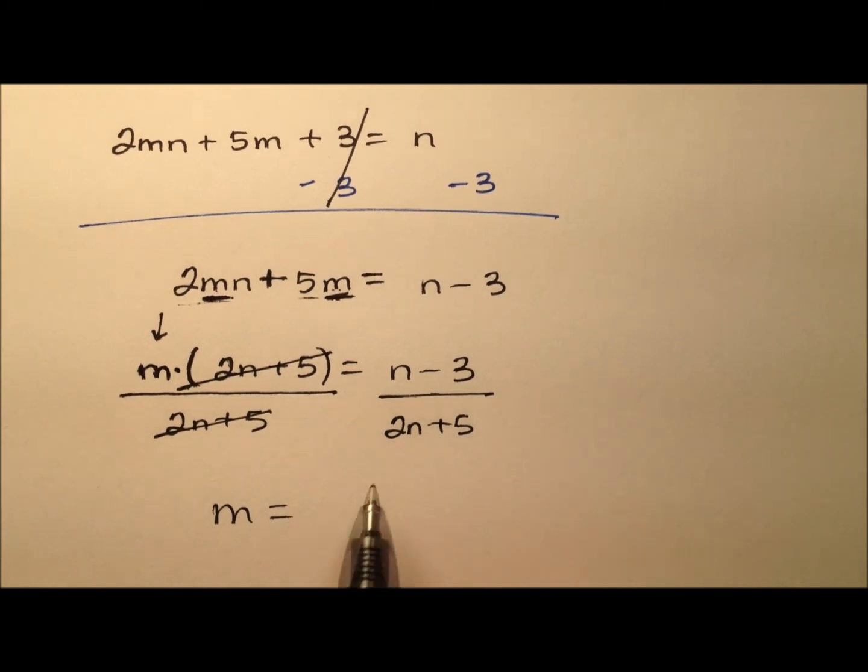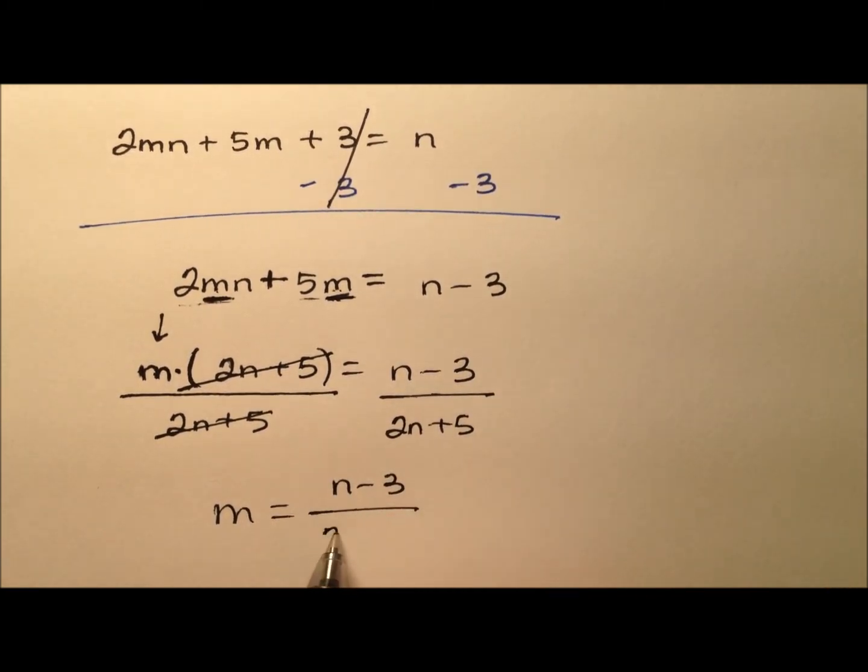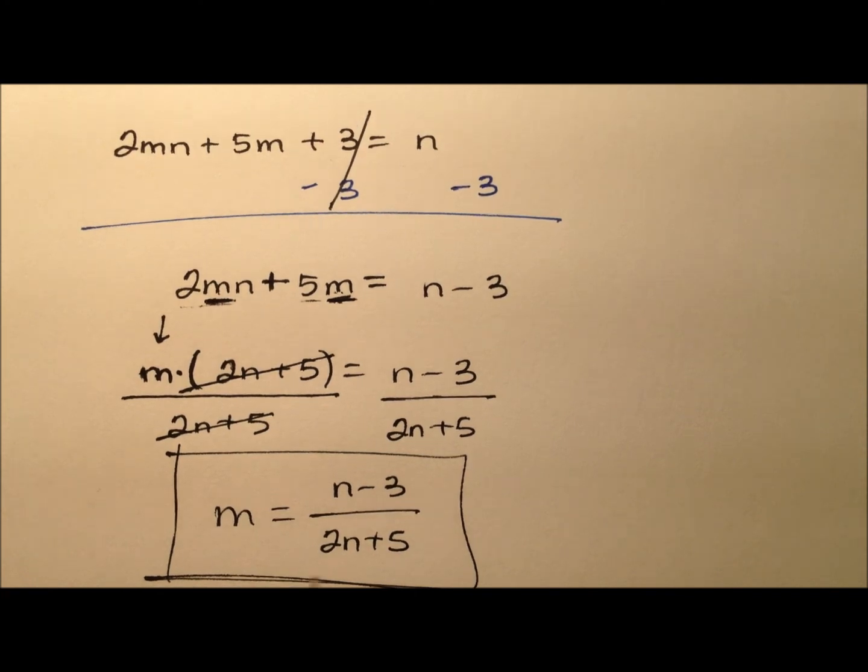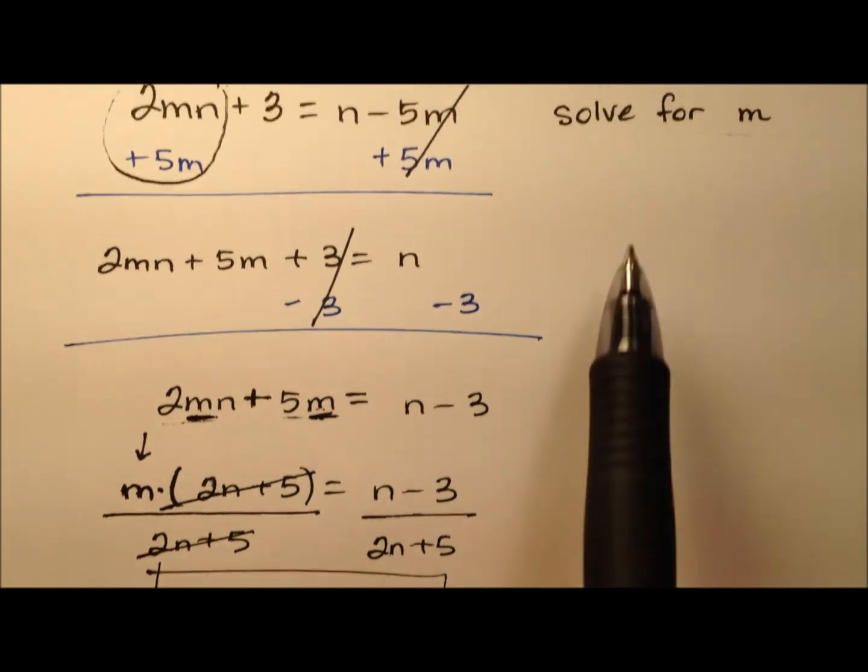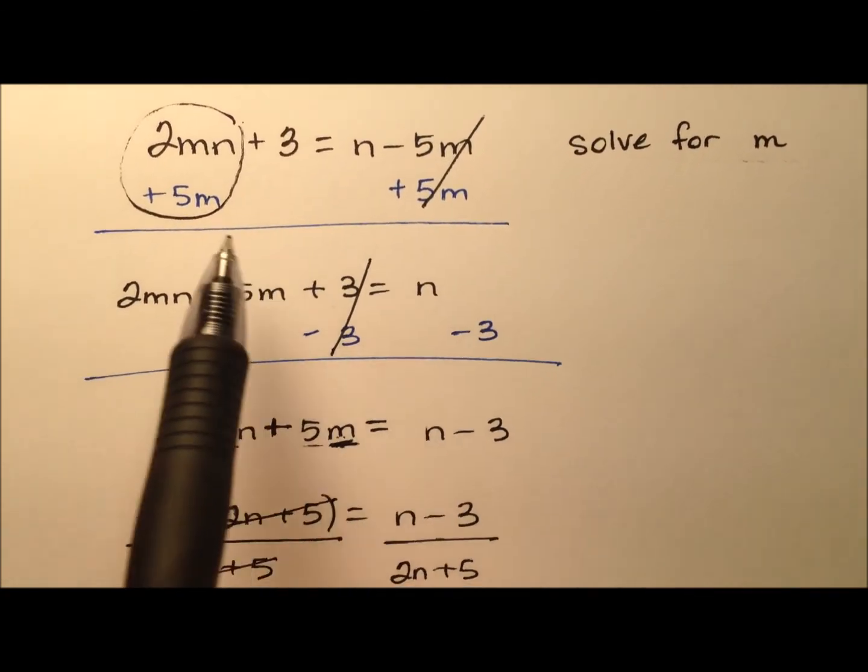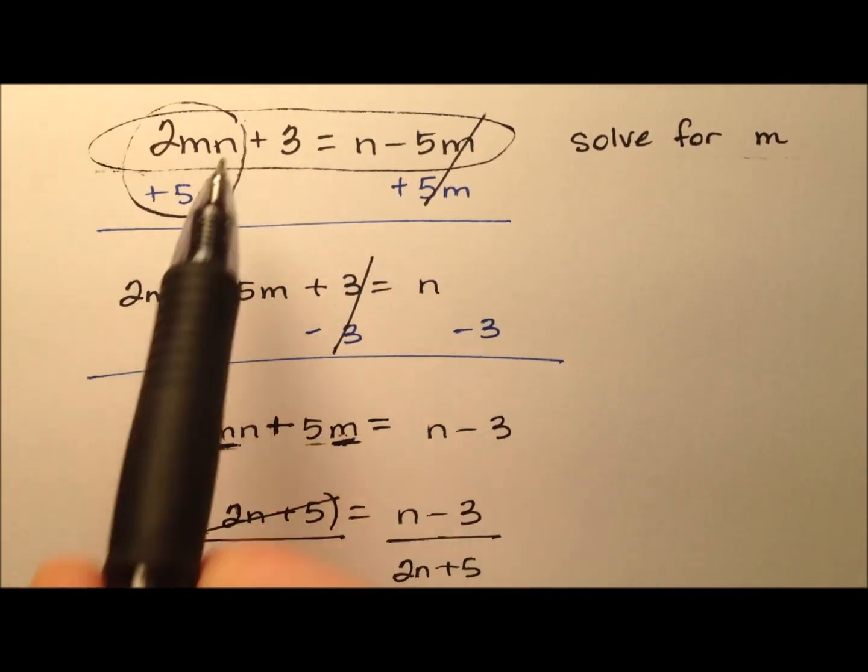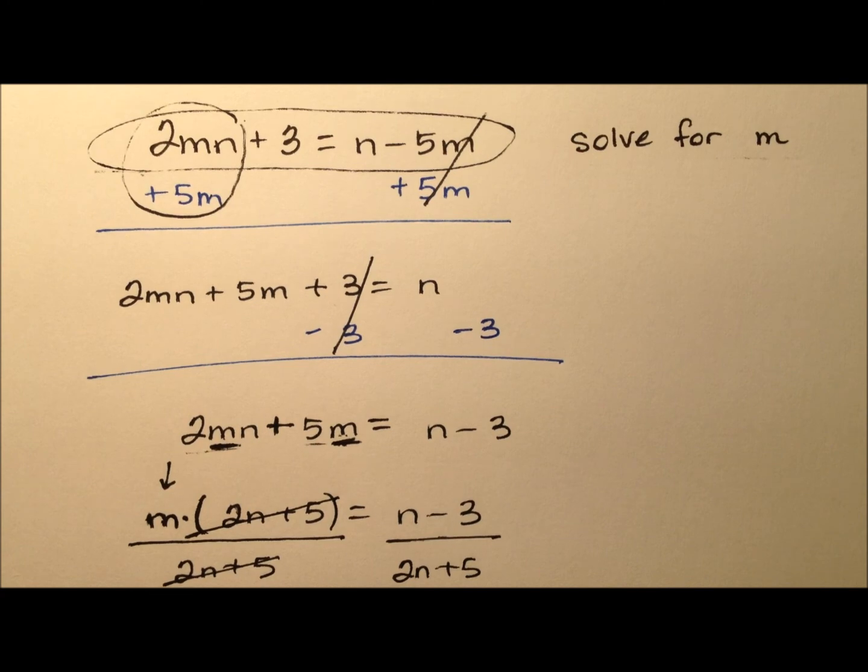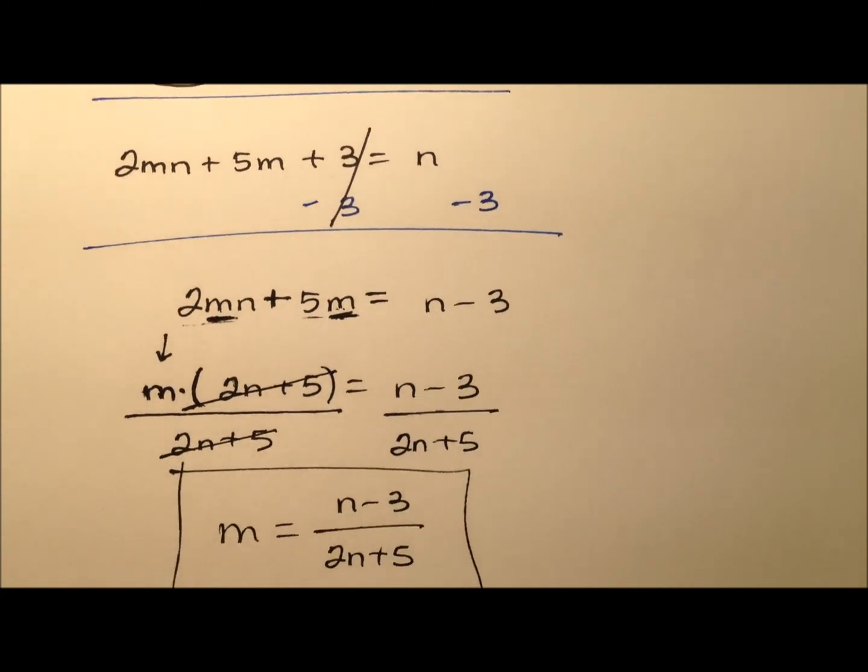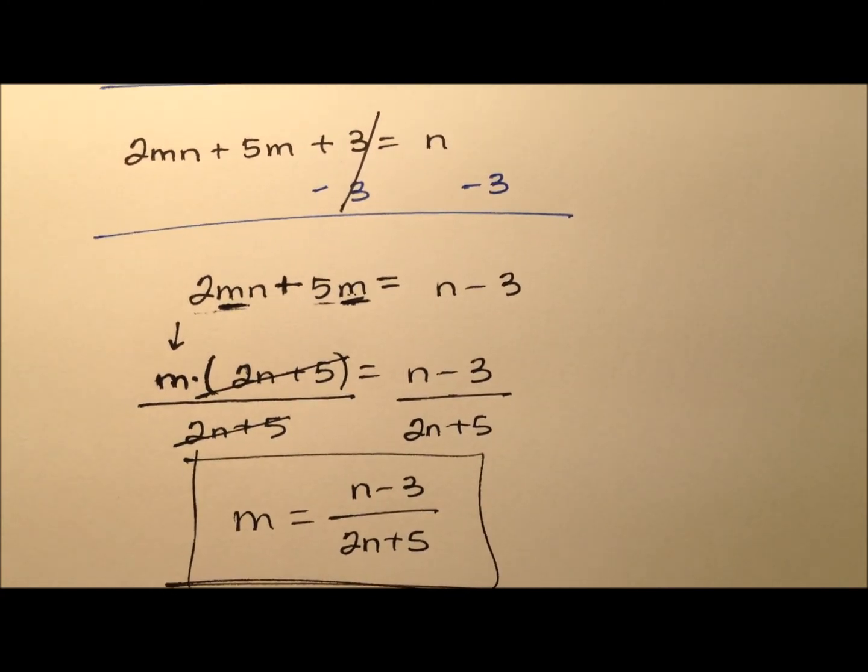And again, that's the goal. And on the right side, I can't simplify this any. So I'm just going to rewrite this division here. So we have the n minus 3 divided by 2n plus 5. I have effectively isolated the m variable. So I have solved for m. And I did so from this original literal equation that contained multiple variables. So here is that solution once again.